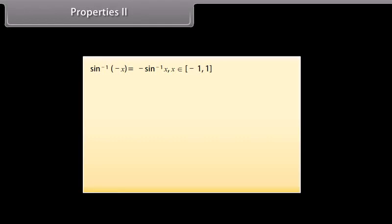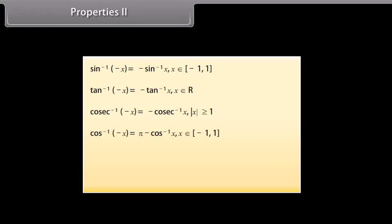Properties 2: sin⁻¹(−x) = −sin⁻¹x, for x ∈ [−1, 1]. tan⁻¹(−x) = −tan⁻¹x, for x ∈ ℝ. cosec⁻¹(−x) = −cosec⁻¹x, for |x| ≥ 1. cos⁻¹(−x) = π − cos⁻¹x, for x ∈ [−1, 1]. sec⁻¹(−x) = π − sec⁻¹x, for |x| ≥ 1. cot⁻¹(−x) = π − cot⁻¹x, for x ∈ ℝ.